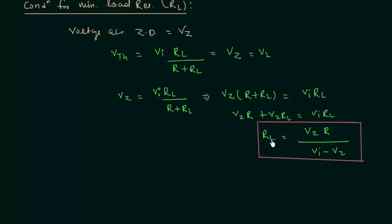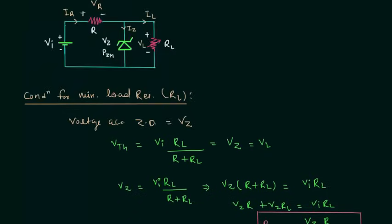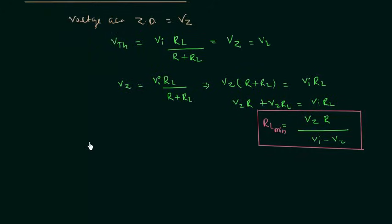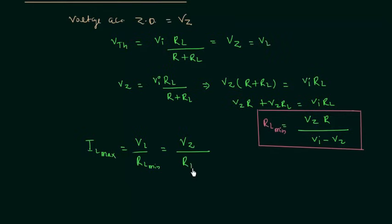This is RL minimum. Now, when load resistance is minimum, current through the load will be maximum. In this case, IL maximum equals VL divided by RL minimum. Since VL equals Vz, we have IL max equal to Vz divided by RL minimum. This is the formula for the maximum value of load current.